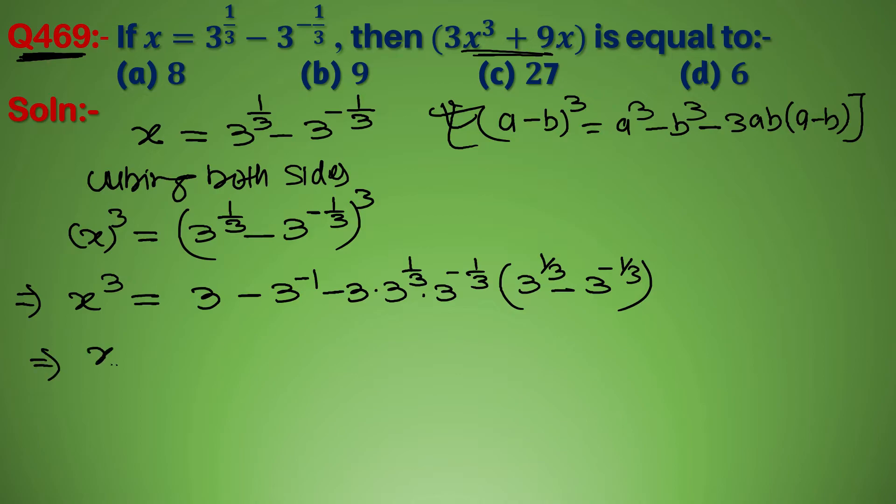Implies that x cube equal to 3 minus 1 by 3 minus, और base same में तो power add होंगे, तो यह 3 के power 0 होगा, तो यह होगा 3. और इसके जगह पे हम लिख देते हैं x.